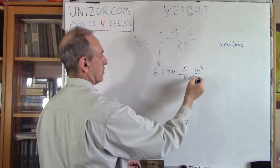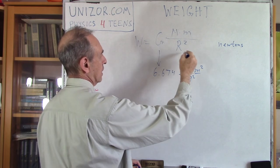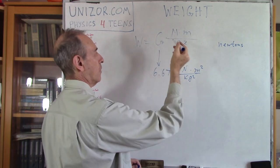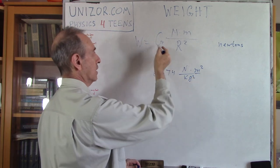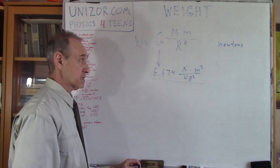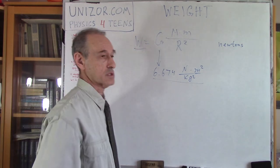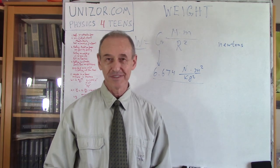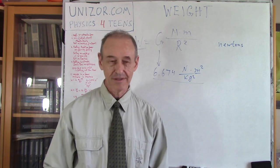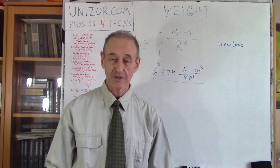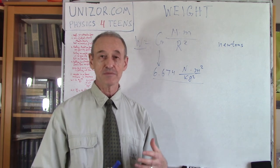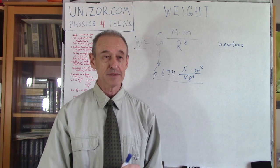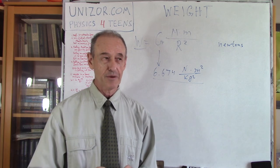If my mass is in kilograms and my radius is in meters and my universal constant is in those units, the result will be the weight in Newtons. Now, who measures weight in Newtons nowadays? We don't. So let's talk about units of measurement of weight. The fact is weight is measured in pounds and kilograms. However, that's especially about kilograms — that's not exactly the correct way of doing it, because the kilogram was introduced as the unit of mass, not the unit of weight.